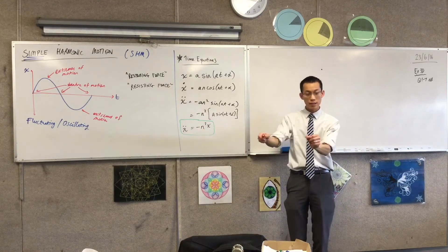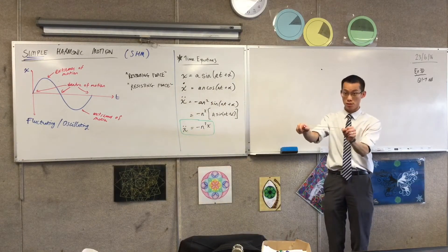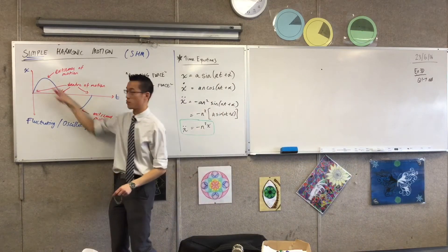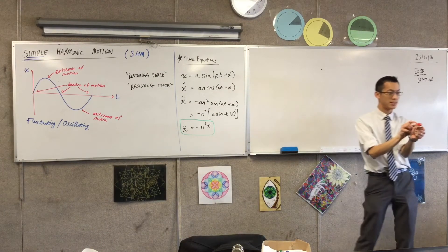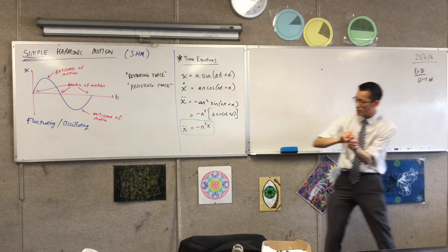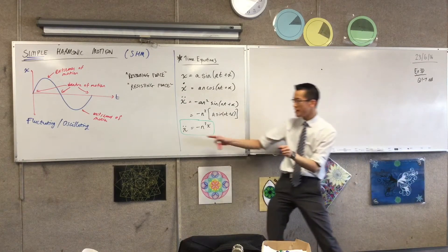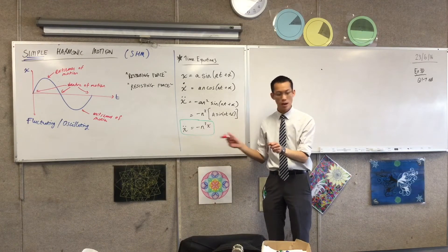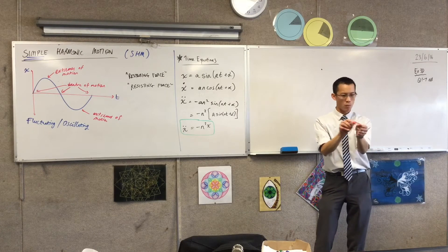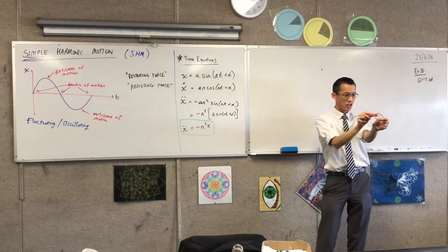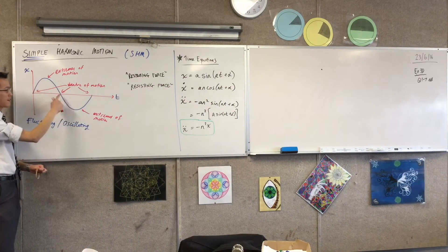As you get to the extreme of motion, that acceleration overcomes your velocity — you stop. Stationary point. So you stop, then you start to come back. At the point where you're sitting on top of the origin, this differential equation tells me that since the displacement is zero, the acceleration must also be zero. So there's nothing accelerating the object at that particular instant, but remember it came from over there, so as it passes by the origin it's going really fast. That corresponds to the fact that the steepest parts of this graph are at the center of motion.